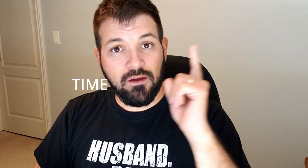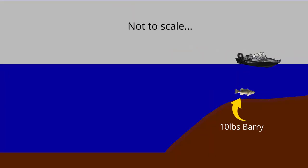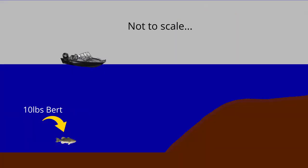TVG stands for Time Variable Gain. With no TVG applied, if you're cruising around in 15 feet of water and you spot Barry the Bass — who's been gorging himself on the invasive round gobies in Lake Ontario and grown to like 10 pounds — he would look something like this on your sonar screen.